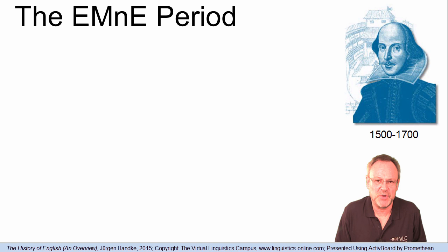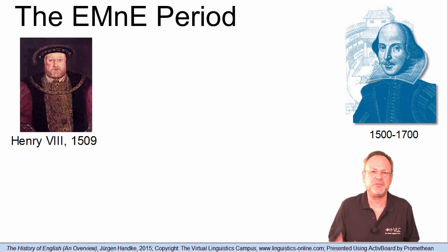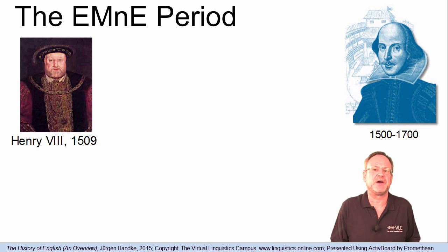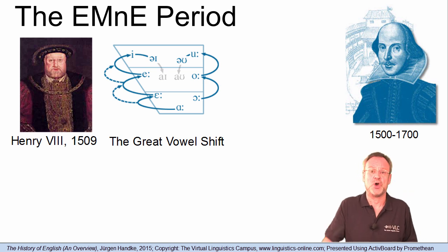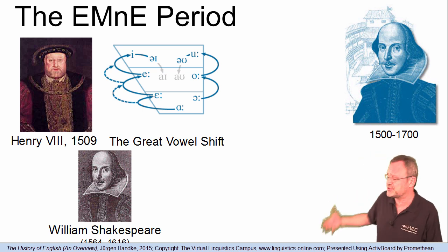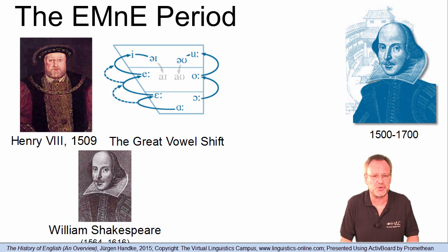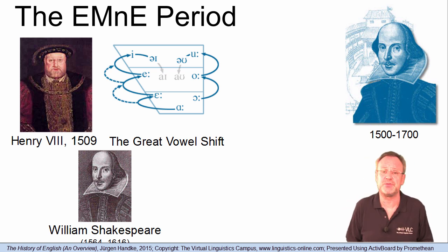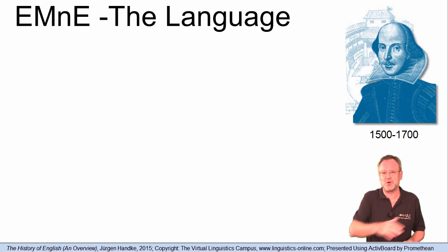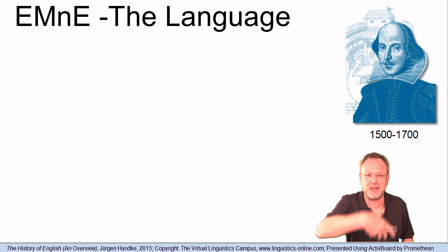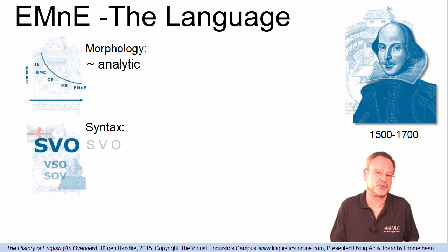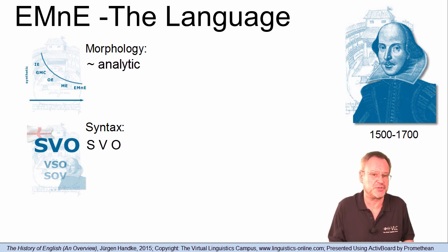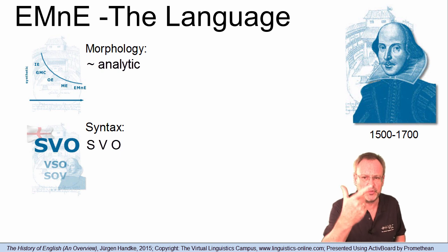The beginning of the Early Modern English period coincides with the ascendancy of Henry VIII to the throne in 1509. The end of the Early Modern English period is marked by the completion of the great vowel shift and the beginning of the scientific age at around 1700. Most influential with regard to Early Modern English were the works of William Shakespeare. For this reason, Early Modern English is often alternatively referred to as Shakespearean English. By the end of the Middle English period, most of today's syntactic and morphological patterns had been established. Early Modern English was fairly analytic. The word order had already become quite fixed to subject-verb-object due to a reduced inflectional system, and of the five Old English cases, only two had survived.